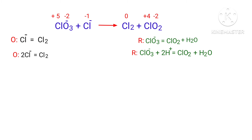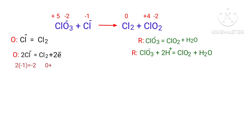For a redox reaction, the addition of charges should be equal on both sides. In the oxidation half reaction, both sides are not equal. To make them equal, you should add electrons. You can add two electrons to the right side to make it equal to minus 2.